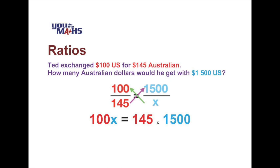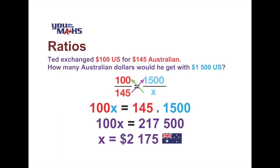Simplifying, we get 100X on the left-hand side, and the product on the right-hand side is 217,500. This is now an algebraic problem. To find X, we divide both sides by 100 — the opposite of multiplying by 100 — and we get X equals 2,175. So that's how much money Ted's going to get if he exchanges $1,500 US dollars, based on the exchange rate presented at the start of the problem.